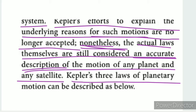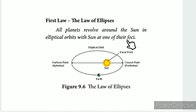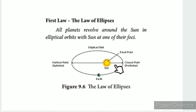Kepler's 3 laws of planetary motion can be described as below. The first law: all planets revolve around the sun in elliptical orbits, with the sun at one of their foci. An ellipse is different from a circle — planets follow an elliptical orbit with the sun at one focus.